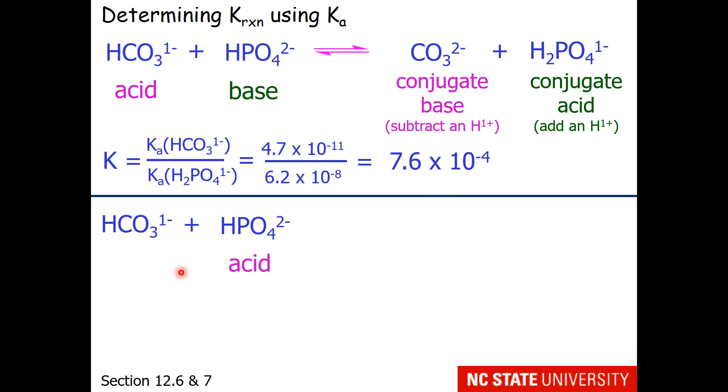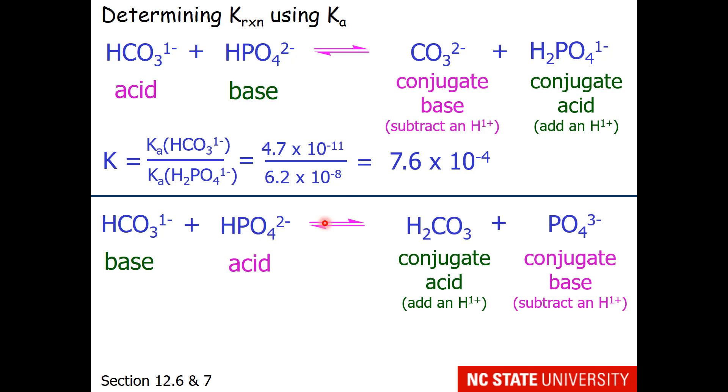Let's try the other scenario where hydrogen phosphate is our acid and hydrogen carbonate is our base. Let's complete the reaction. The acid loses a proton to become phosphate and the base gets protonated to become carbonic acid. So we're going to do the Ka of the reacting acid, which is hydrogen phosphate, over the Ka of the produced acid, which is carbonic acid.